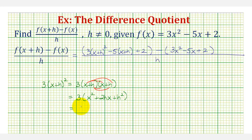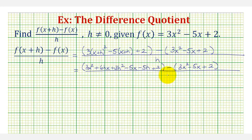And now we'll distribute three, so we have three x squared plus six hx plus three h squared, which means we would have three x squared plus six hx plus three h squared, and we'll distribute negative five, so minus five x minus five h, plus two, again minus f of x. All of this is still divided by h.